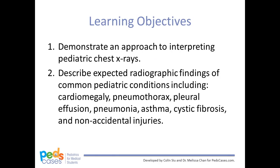The approach explored in this video is a top-to-bottom approach. We will begin by looking at the thymus, followed by the mediastinum, heart, lung fields, diaphragm, and end with the bony structures. The learning objectives are to: 1. Demonstrate an approach to interpreting pediatric chest x-rays, and 2. Describe expected radiographic findings of common pediatric conditions, including cardiomegaly, pneumothorax, pleural effusion, pneumonia, asthma, cystic fibrosis, and non-accidental injuries.